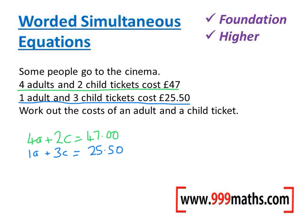The question asks us to work out the cost of an adult ticket and a child ticket. Using the normal rules of simultaneous equations, we need to multiply these until the coefficients are the same. I'm going to make them both have 6c, which involves multiplying the top equation by three and the bottom by two. Multiplying the top by three gives 12a + 6c = 141 pounds.